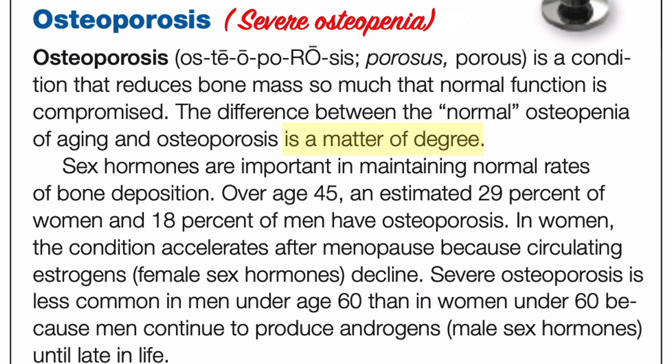Over age 45, an estimated 29 percent of women and 18 percent of men have osteoporosis. In women, the condition accelerates after menopause because circulating estrogens — female sex hormones — decline. Severe osteoporosis is less common in men under the age of 60 than in women under 60, because men continue to produce androgens, which are the male sex hormones.